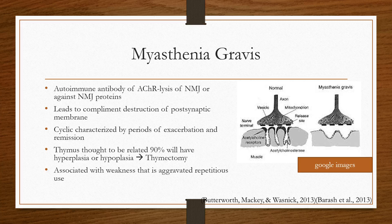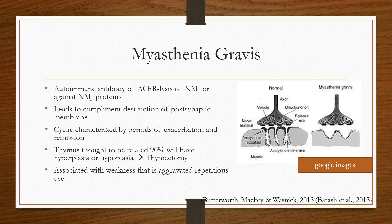Myasthenia gravis is characterized by weakness that becomes worse over time and with repetition. Patients will be well rested in the morning and able to move, but as the day progresses they'll become more and more symptomatic. They can have symptoms of dysarthria, dysphagia, and aspiration risk involving various muscles in the body, which are characteristically classified in the staging system we're going to go over — it can be quite debilitating.